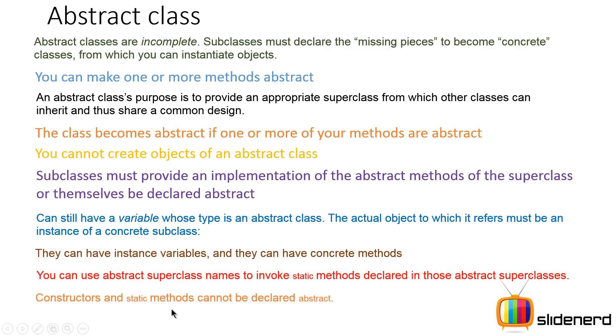Constructors and static methods cannot be declared abstract. Now you can call static methods. Now there is a difference between the above point and the below one. The below point says that if you have a class, you cannot make its constructor as abstract and you cannot make its static methods as abstract.